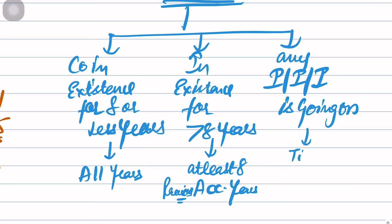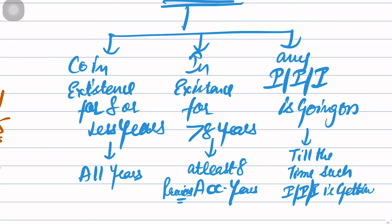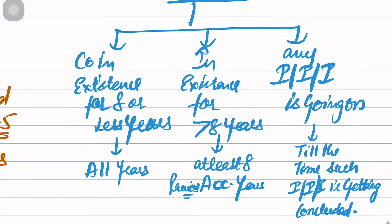For example: ten years are over, you told eight years - but if eleven, twelve, thirty, forty, fifty years have passed and III (inspection, inquiry, investigation) is going on, you still have to maintain them. If company is in existence for less than eight years, then all the years - because the minimum requirement is eight years. If more than eight years: current year plus the previous last eight years. This is the provision relating to preservation of Books of Accounts.